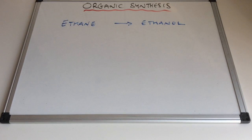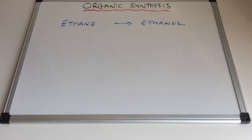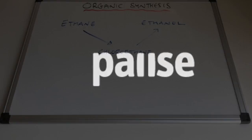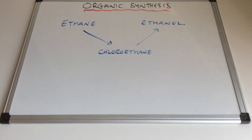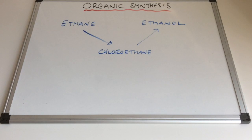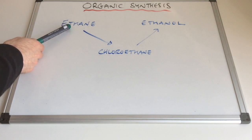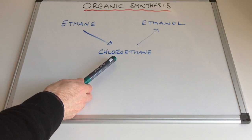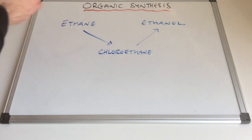Let's look at another example: how would you convert ethane into ethanol? Again, this is not possible in one step, so we have to go via an intermediate. The intermediate chosen is chloroethane — you could use any haloalkane, but chloroethane is used here. So essentially we're turning an alkane into a haloalkane, and then turning the haloalkane into the alcohol.